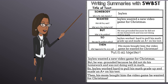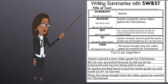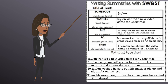Now let's put it all together. Jalen wanted a new video game for Christmas, but he was grounded because he did not do his homework and was not doing well in math. So, Jalen worked hard to pull his math grade up and made an A-plus on his test. Then, his mom bought him the video game he wanted for Christmas.